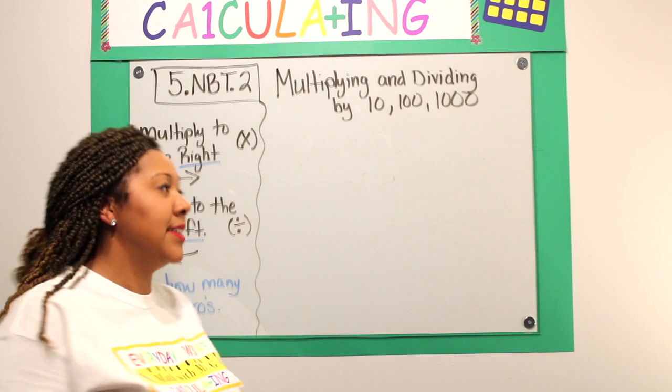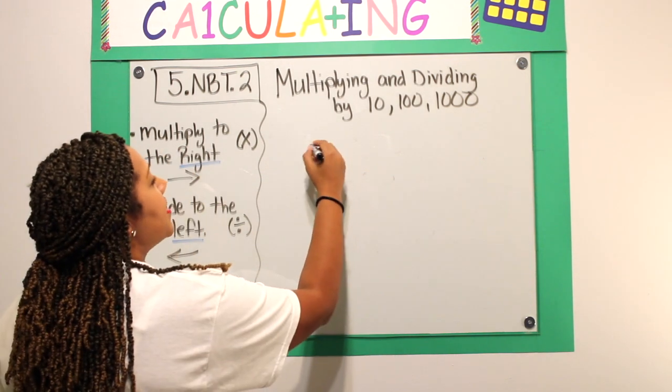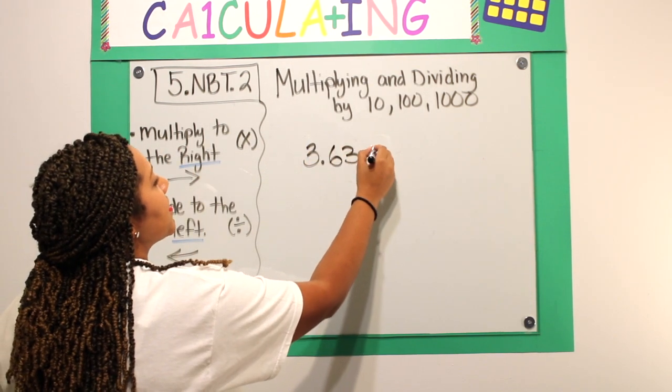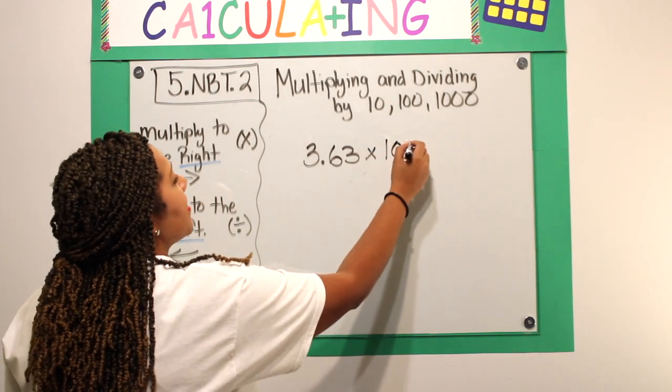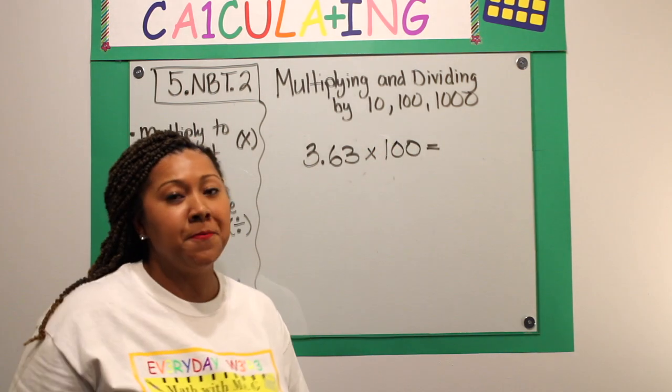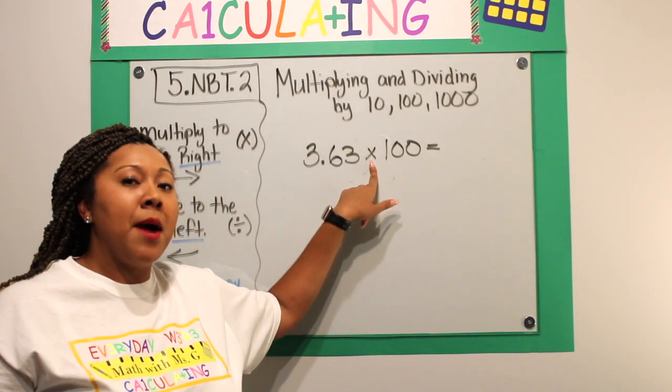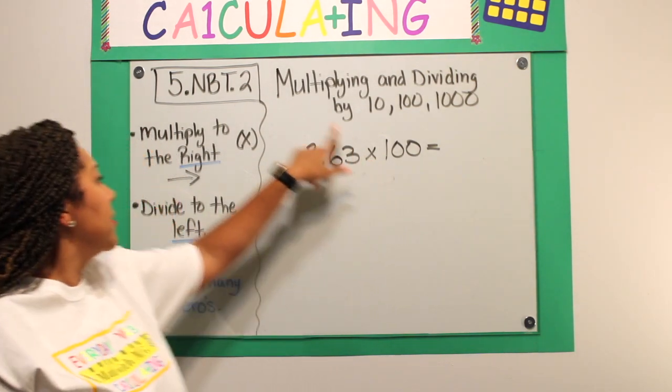I'll show you what that looks like. Say I have the decimal 3 and 63 hundredths, and I want to multiply this by 100. Right now, I'm going to look at my operation. I know that I'm going to multiply. So, I am moving my decimal to the right.